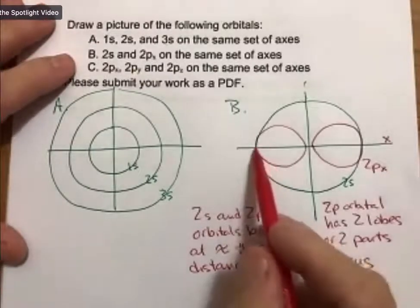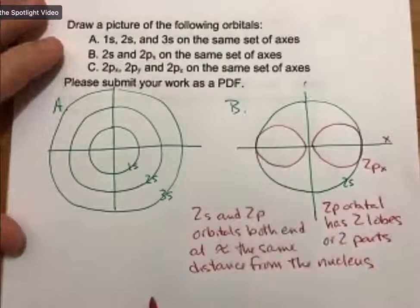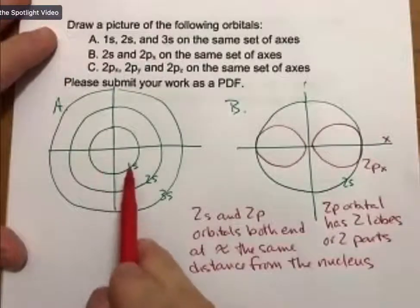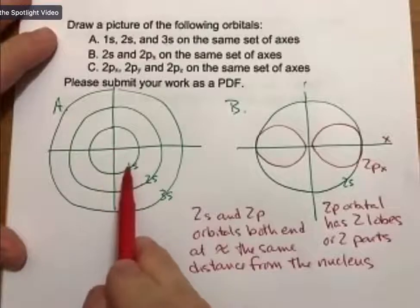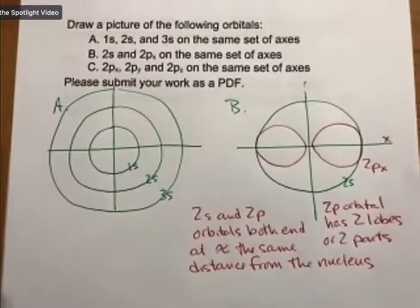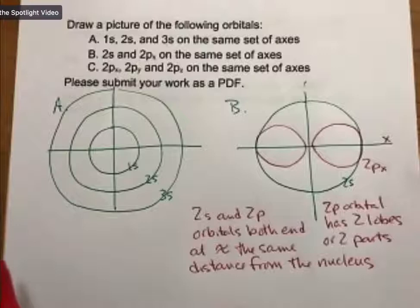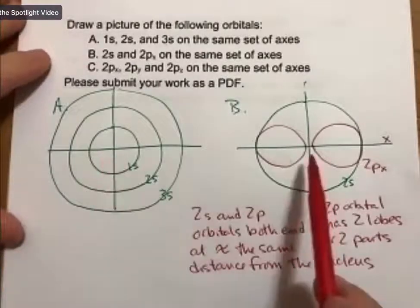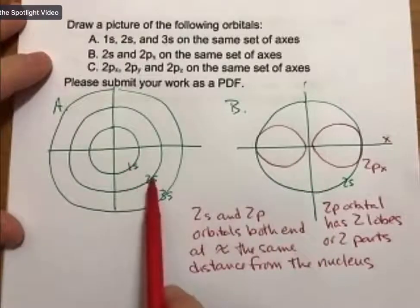So, the way I think about this is that when you have a 1s sublevel and a 1s orbital, there's only one way to put electrons in there. There's only one orbital in all of the 1s and the n equals 1 sublevel. Then for n equals 2, the sphere is bigger.